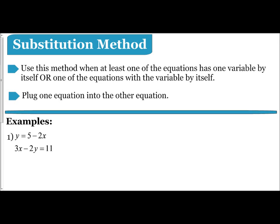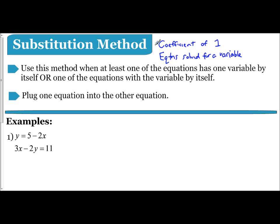In the following video we're going to examine how to solve a system of equations using the substitution method. The substitution method is used when at least one of the equations has one variable by itself. What this means is you either want a coefficient of one for one of the variables, or you want one of the equations already solved for a variable. I'm going to show you examples of both of these.